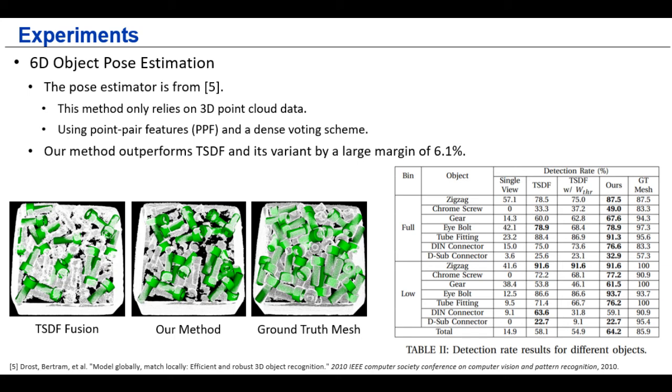And to demonstrate the advantage of our approach in the bin picking problem, we also evaluate the 6D object pose estimation after the depth fusion. Here, we chose a pure point cloud based object pose estimator, that is based on the point pair features, or PPF in short. And we can clearly see that, given the optimal 3D data, like the ground truth mesh, the PPF pose estimator can provide the close to perfect detection rates. And compared to the TSDF fusion, because of the smoother surface and fewer outliers, there is more correct detections on the point cloud that was reconstructed by our method.